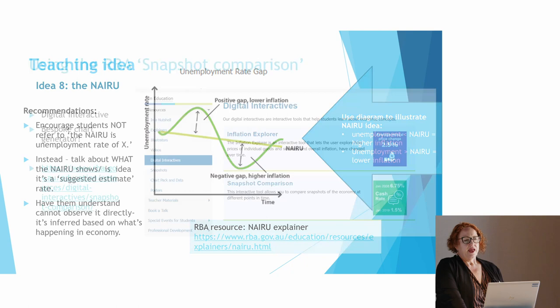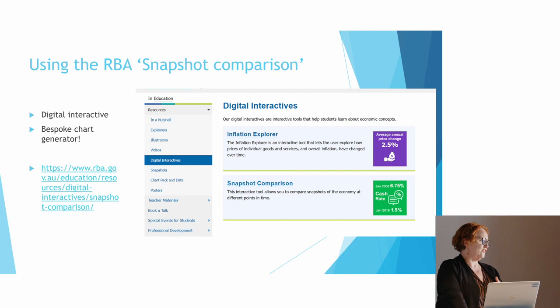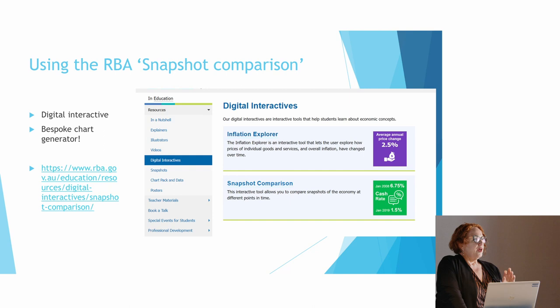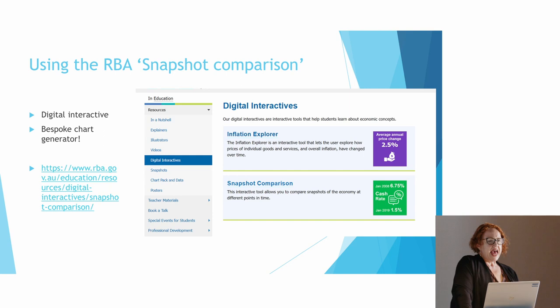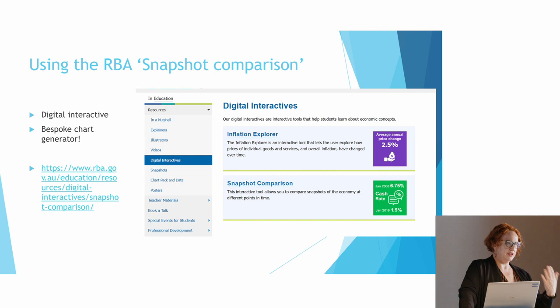Now for a couple of things not necessarily related to employment and unemployment specifically. If you haven't used the digital interactives on the RBA website, you are missing out — your students need to be using them too. They are a bespoke chart generator: you pick what you'd like to plot, the time period, and it plots you the chart. You can download it as a PNG. It allows you to compare a decent range of data and create bespoke charts for assessments.